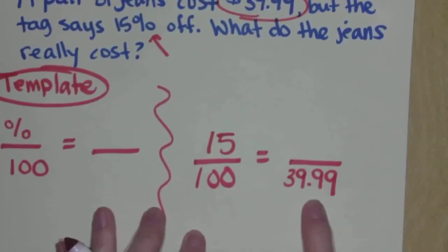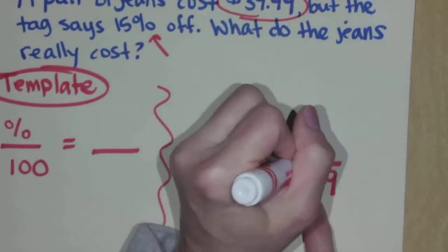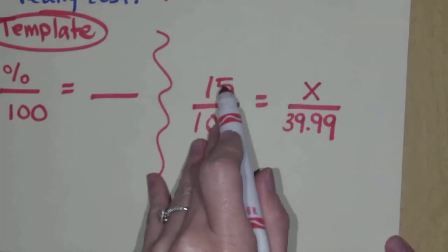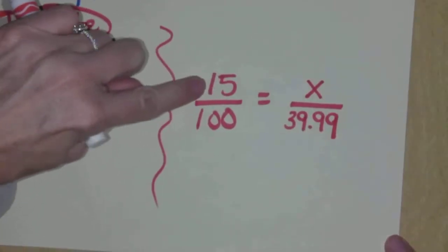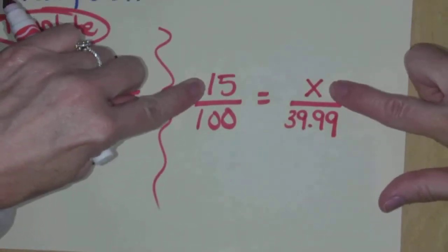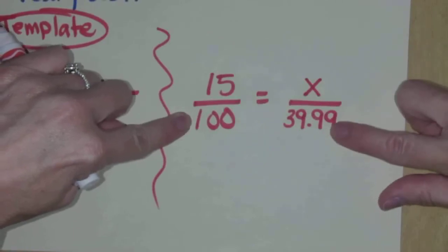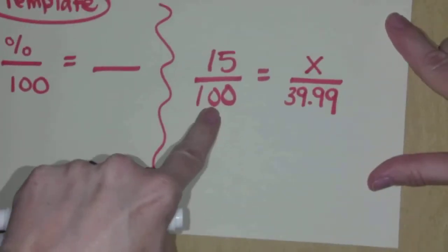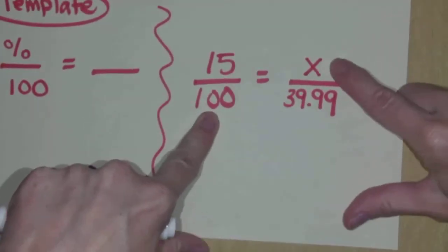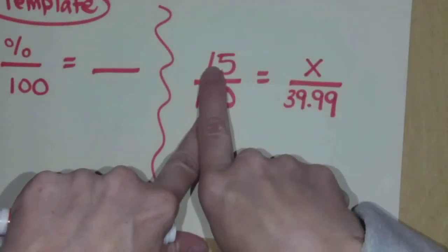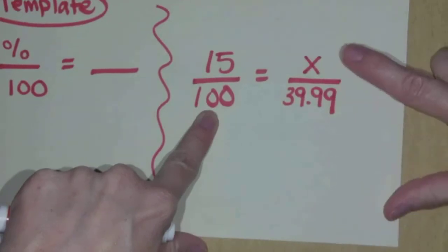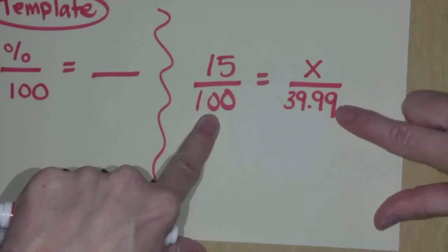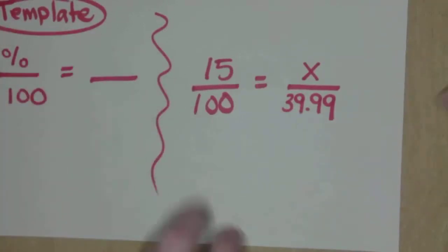What we don't know is in money terms, how much money is coming off this price equated with 15%. So 15% goes with how much money is coming off of 100% of the price. This template will work every time. Here's the kicker. This is always 100. This X can move around. The X is either going to go here if you don't know the percent, here if you don't know what's coming off of your total, or here if you don't know the total itself. Once you have this, you cross multiply.